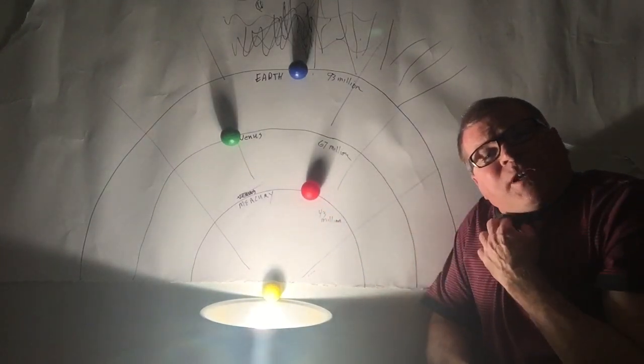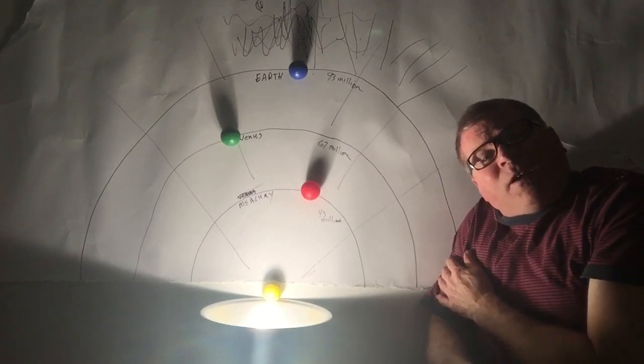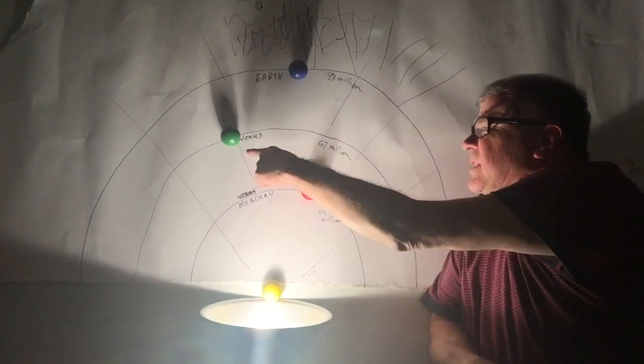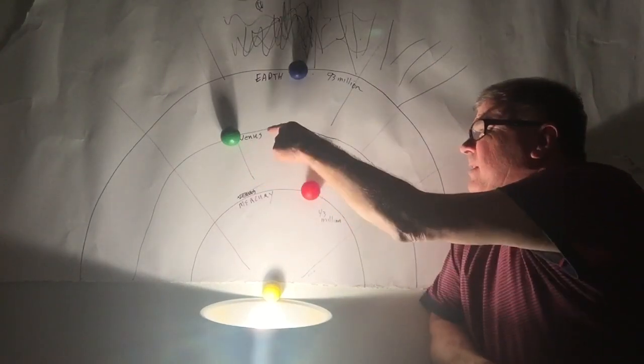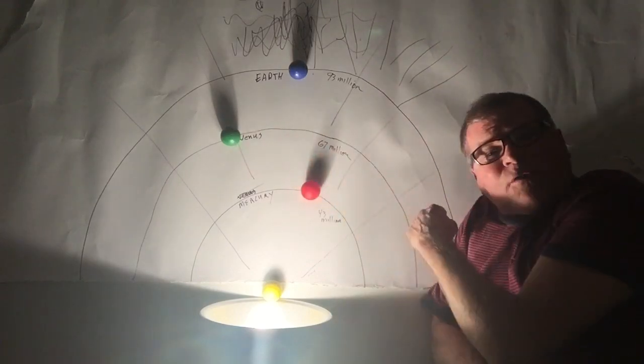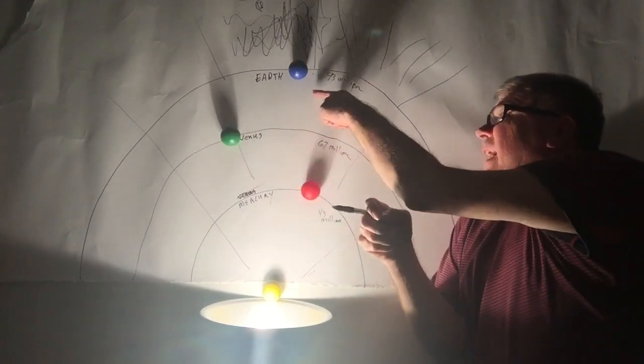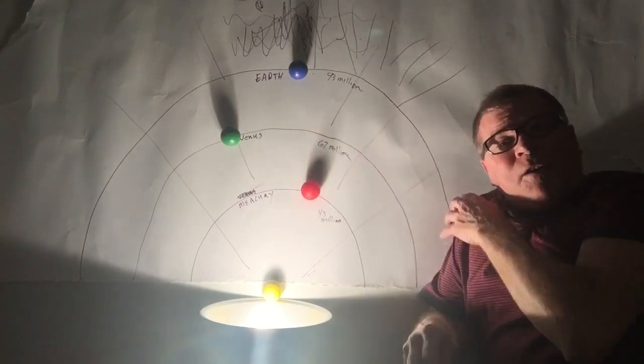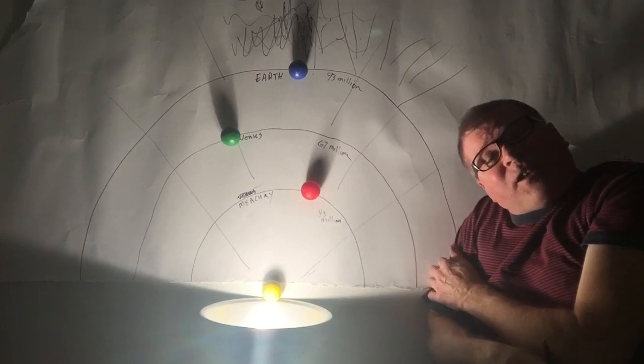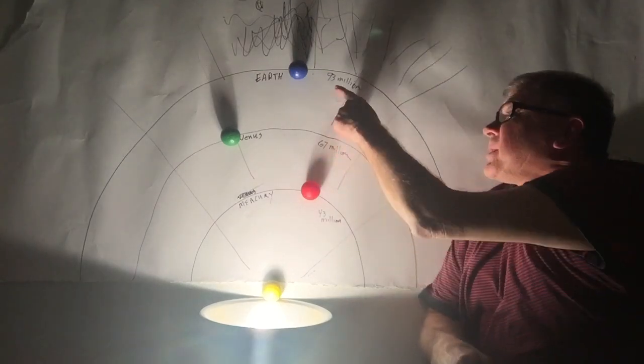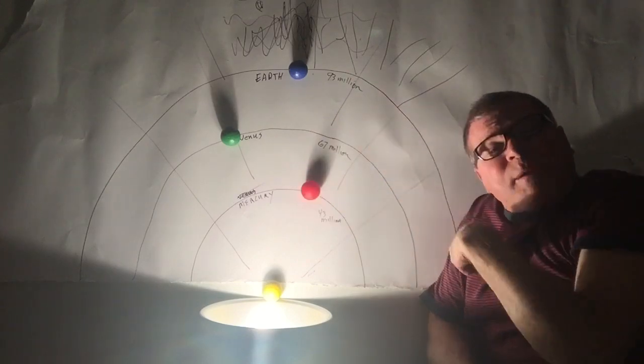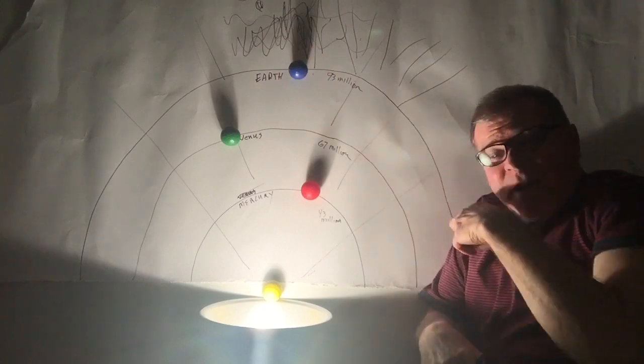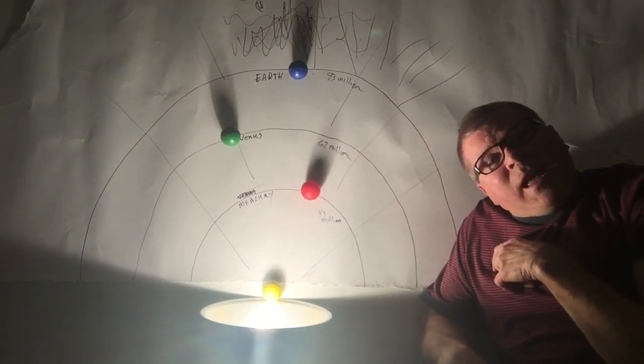And then you have Venus over here at 67 million miles in the second orbit from the Sun. And of course we've got the blue marble, we've got Earth up here in the third orbit going around the Sun at 66,000 miles an hour, supposedly, at a distance of 93 million miles from the Sun. And in the meantime we're spinning around here.